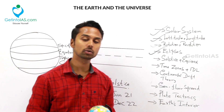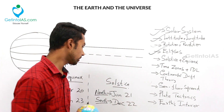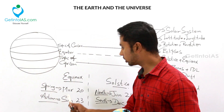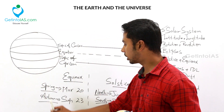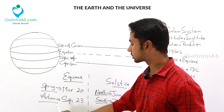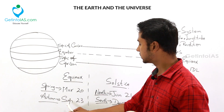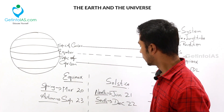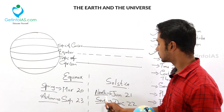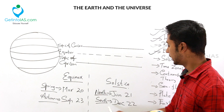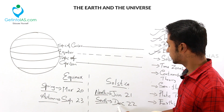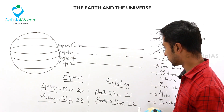Now we will go into the date details. Equinox happens twice — one is spring equinox and the other is autumn equinox: March 20 and September 23. About solstice: northern solstice date is June 21 and southern solstice date is December 22.